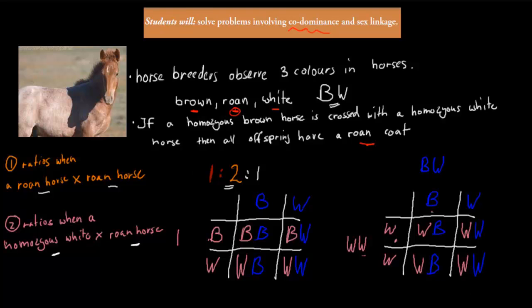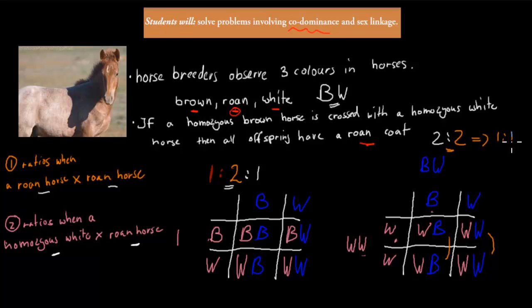So we have a ratio of two white to two roan, which is the same as a 1 to 1 ratio — in other words, a 50% chance it will be roan and a 50% chance it will be white.